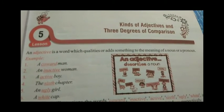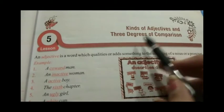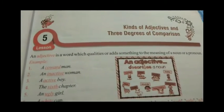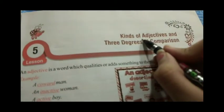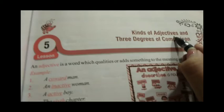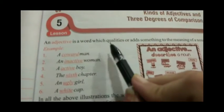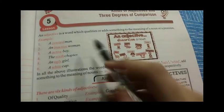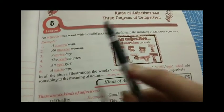Good morning students. Today we are going to start chapter number five, that is kinds of adjectives and three degrees of comparison. Adjectives are known as describing words. An adjective is a word which qualities or adds something to the meaning of a noun or a pronoun.